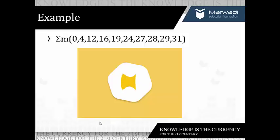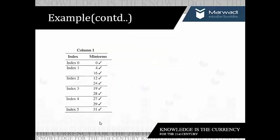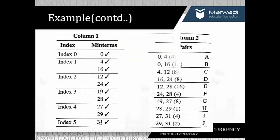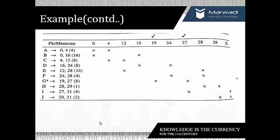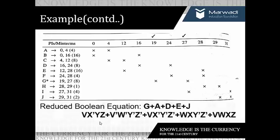Now I request you all to pause the video and solve the given set of minterms. The answer is given in terms of column 1 and column 2; column 2 is obtained after pairing the successive groups of column 1. From column 2 we can obtain the essential prime implicants and the final reduced boolean equation as shown.